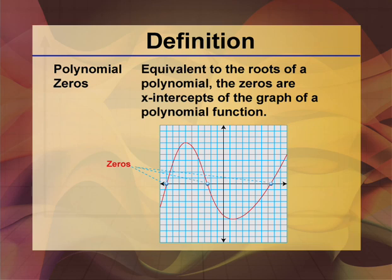In the graph shown, the polynomial function intersects the x-axis at three points. Those points are the polynomial zeros. They are called zeros because the y-value for each intersection point is y equals zero.